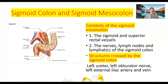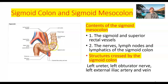This is another image. This is the sigmoid colon, S-shaped — a little bit S-shaped. It is continuous with the rectum. Here we are seeing the relationship of the sigmoid colon: it is passing over the left ureter, left obturator nerve, left external iliac artery, and left external iliac vein.